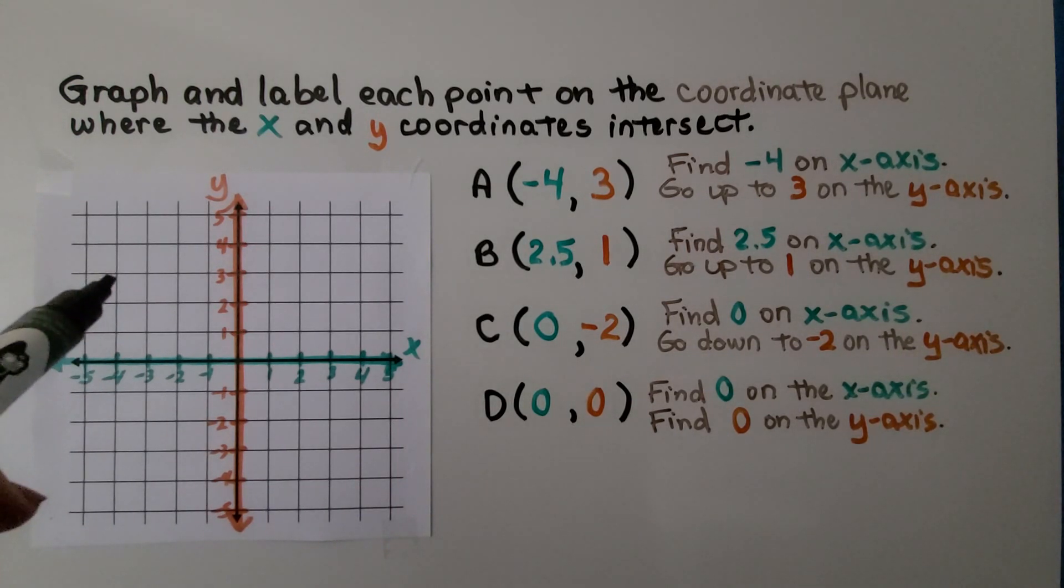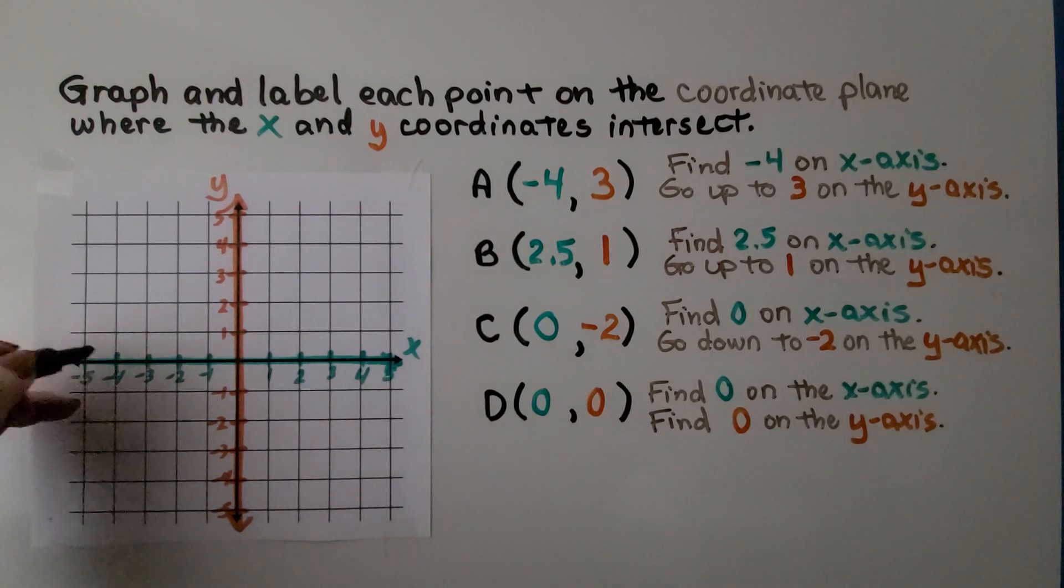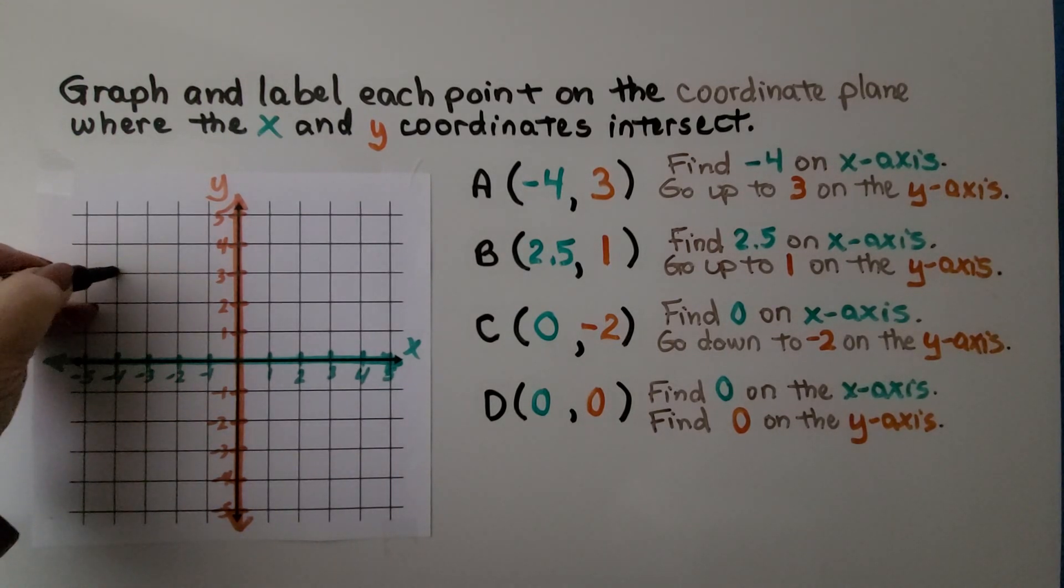Now we need to go to three for y. That would be one, two, three. It would be right there. Negative four for x and three for y. We can label it with its letter A.